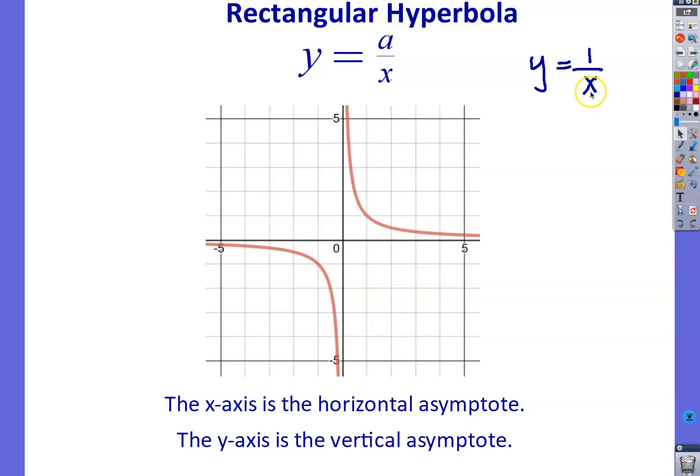Similarly, if x equals negative 5, y becomes negative 1 fifth, which is that point. And if x equals negative 1 fifth, y becomes negative 5, which is that point. So every rectangular hyperbola has a horizontal and a vertical asymptote.